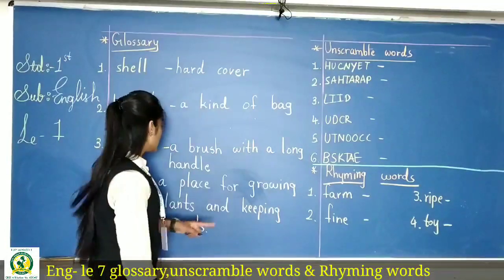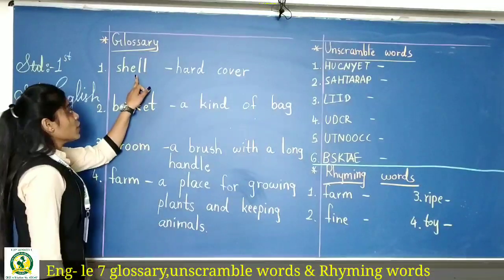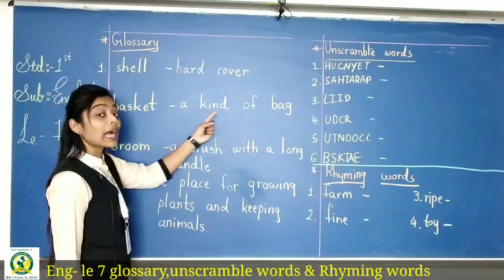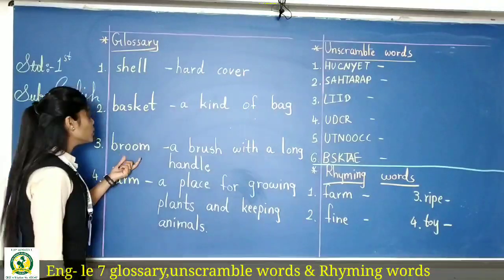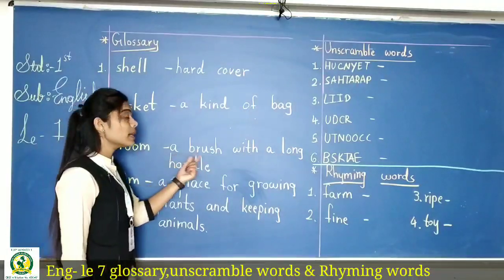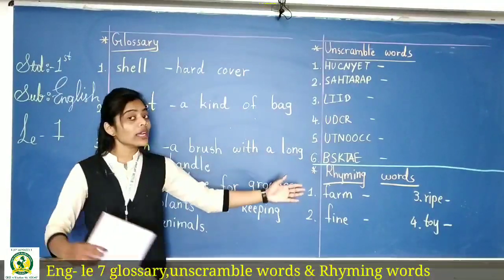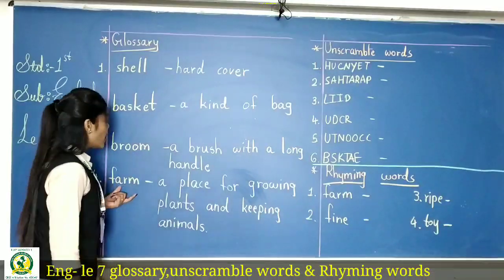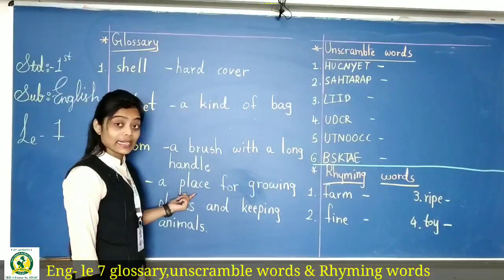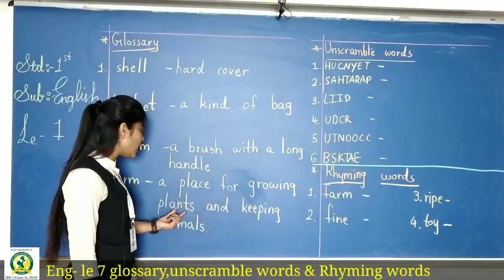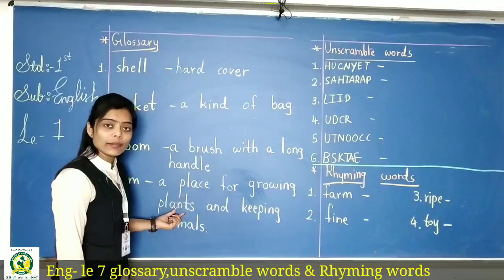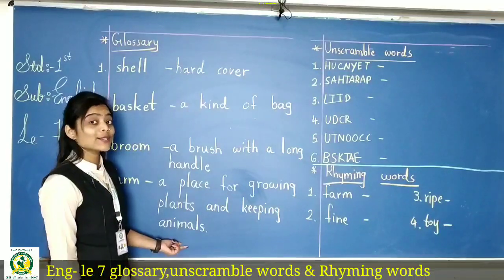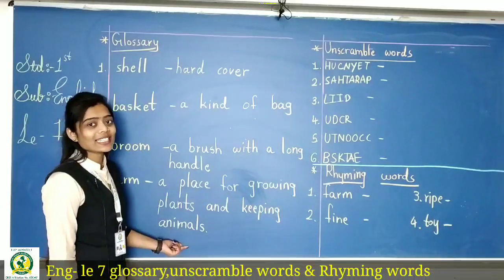Dekhiye — shell matlab 'hard cover', basket means 'a kind of bag', broom means 'a brush with a long handle', farm means 'a place for growing plants and keeping animals'. Okay?